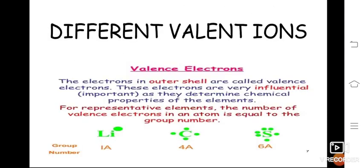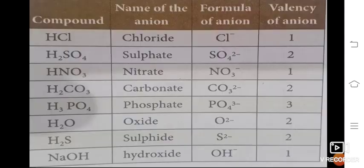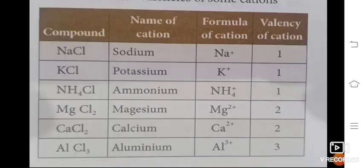Different valent ions depend on electrons in the outer shell. Lithium is a group 1A element, carbon is 4A, and sulfur is 6A, giving them different valencies and combining capacities. Examples of anions include: Cl- in HCl, sulfate (SO4 2-), nitrate, carbonate, phosphate, oxide, sulfide, and hydroxide. Examples of cations include: sodium, potassium, ammonium, magnesium, calcium, and aluminium — these are the positively charged ions.